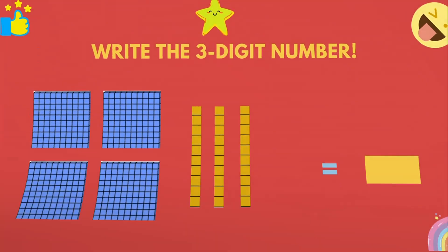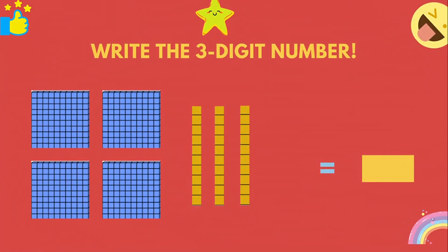Let's see one more. Write the three digit number. When you count the flats of hundreds, you have one, two, three and four — four flats of hundreds. And how many rods of tens are here? Let's count: one, two and three — there are three rods of tens. Can you see any units of ones here? None, right? So we are going to write zero — zero units of ones. So the numeral is 4, 3, 0.